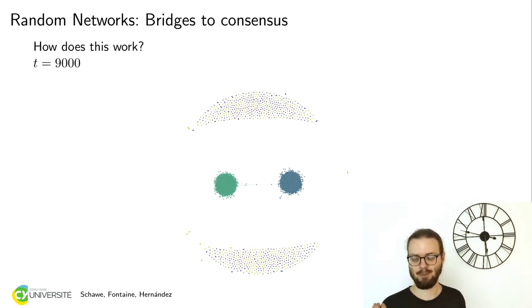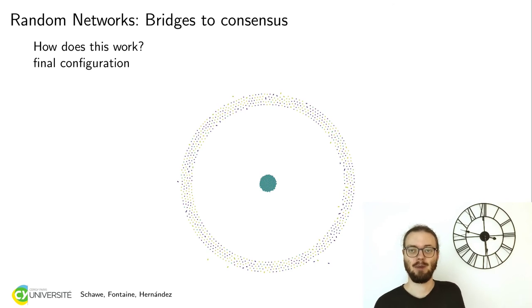After 9000 steps, they become even more similar. Of course, some of the bridges break because they are absorbed into one of the blobs. But still, in this case, there's still a bridge, like a single agent between the two blobs. If we go to 10,000 iterations, we finally converged into one consensus opinion.